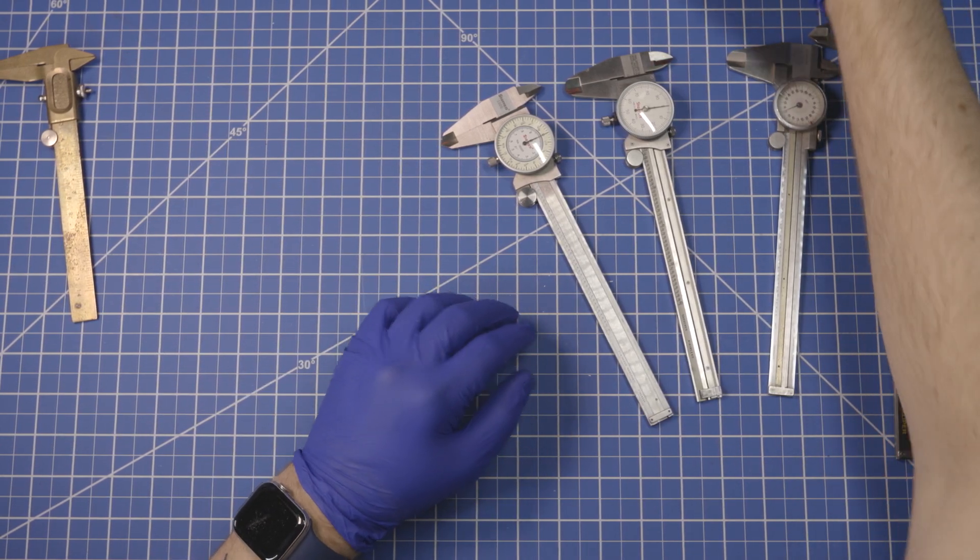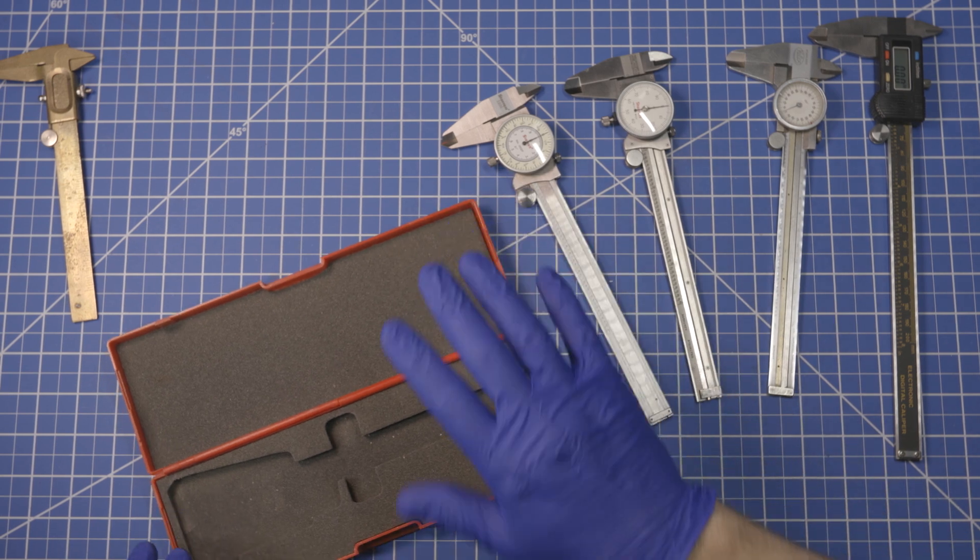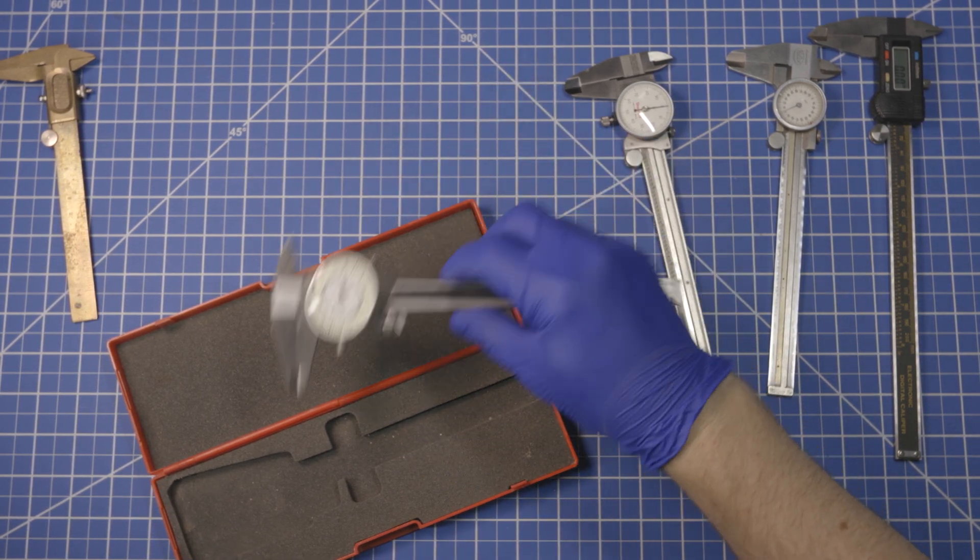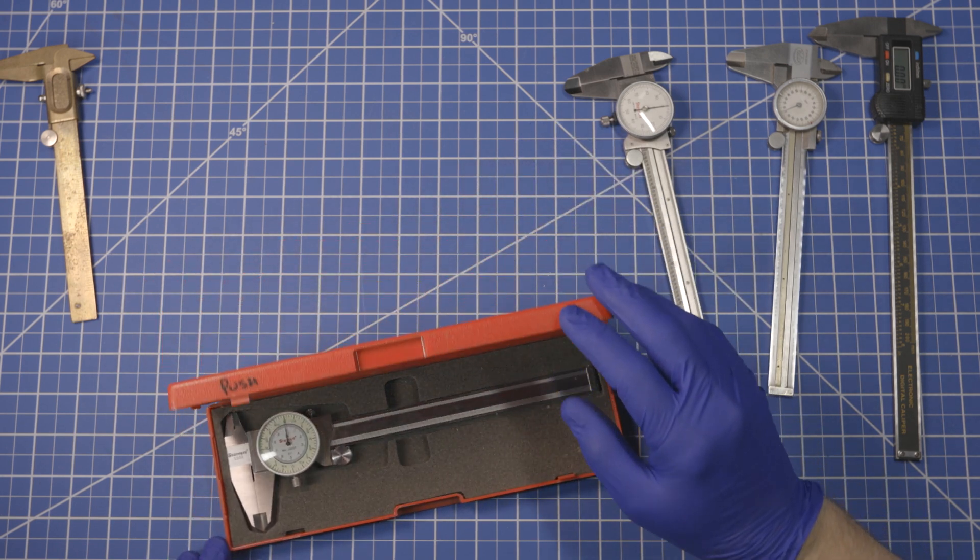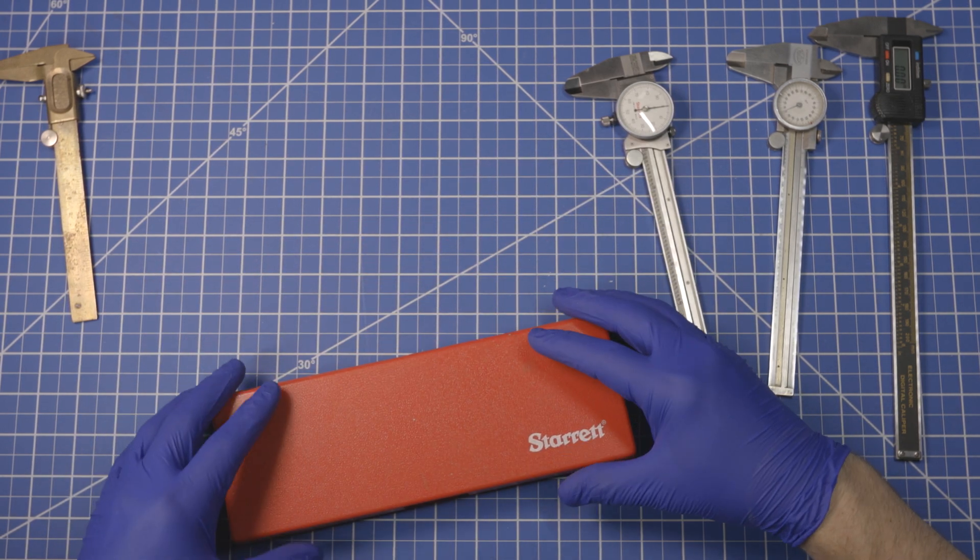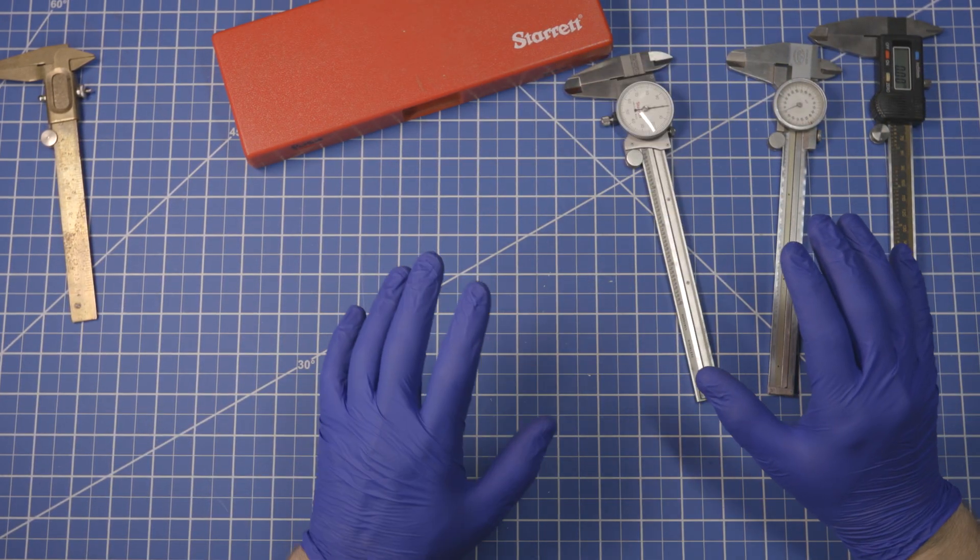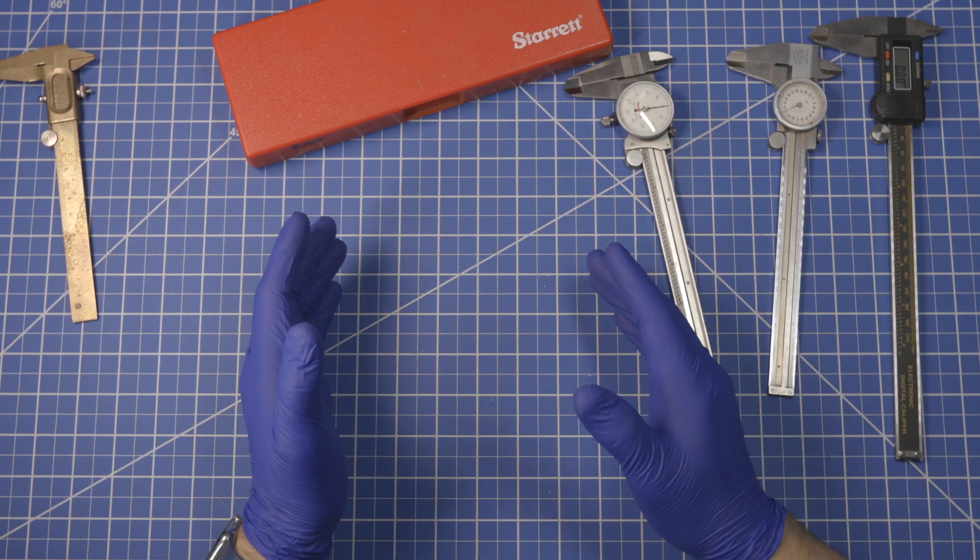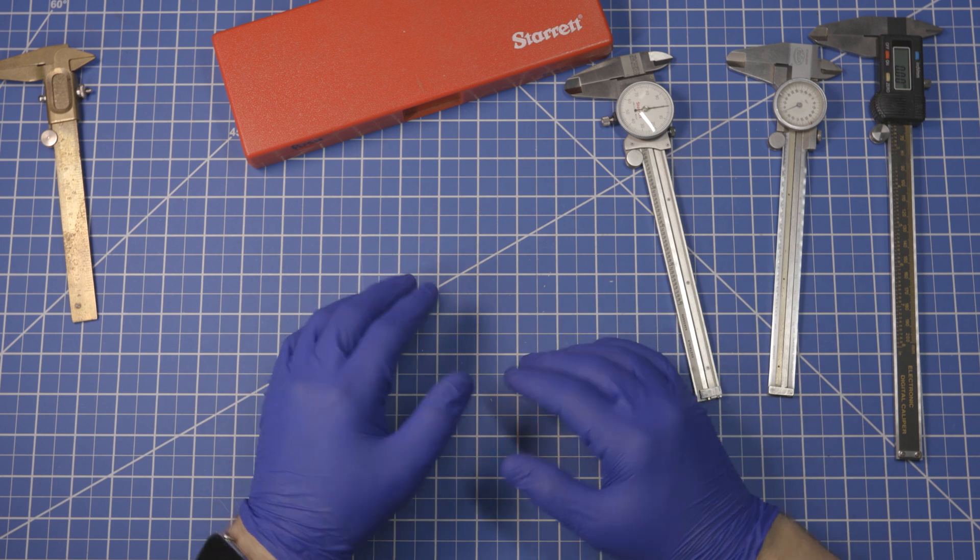If you find yourself getting a set of calipers, I cannot recommend highly enough that you keep the box and keep your calipers in the box because having them get knocked around and knocked out of calibration or otherwise damaged, it could completely break the tool, but at the very least it may be making it less accurate. So for me, I keep all of the tools that I have boxes for them in their boxes.